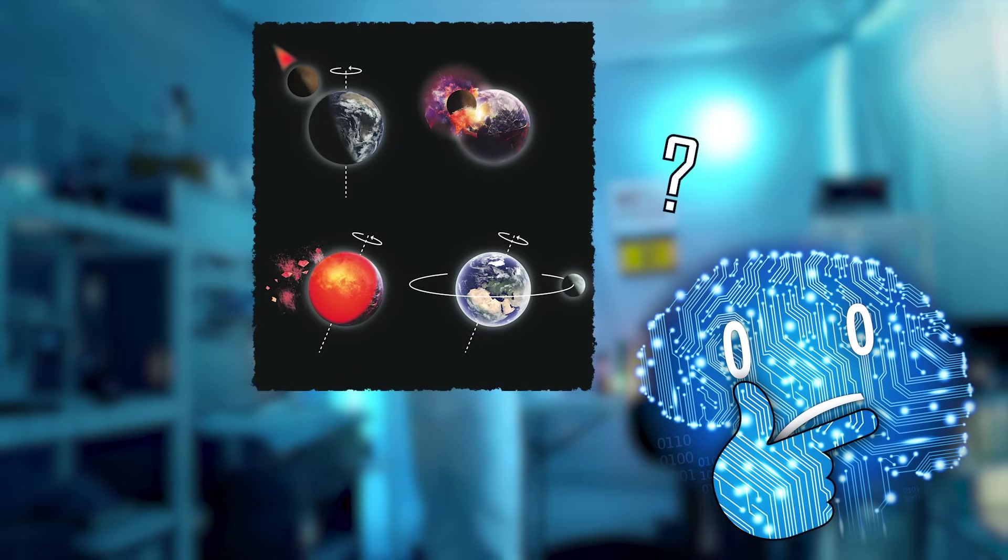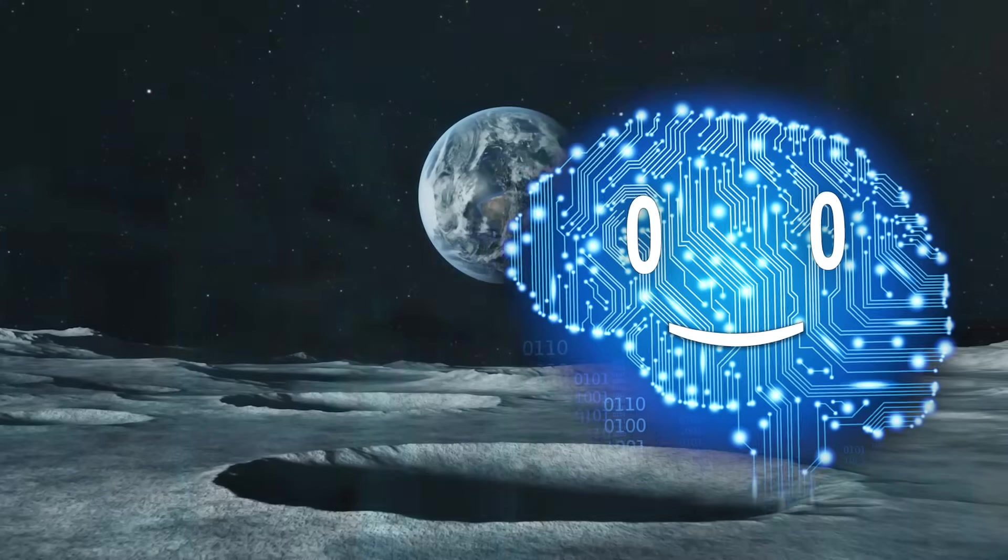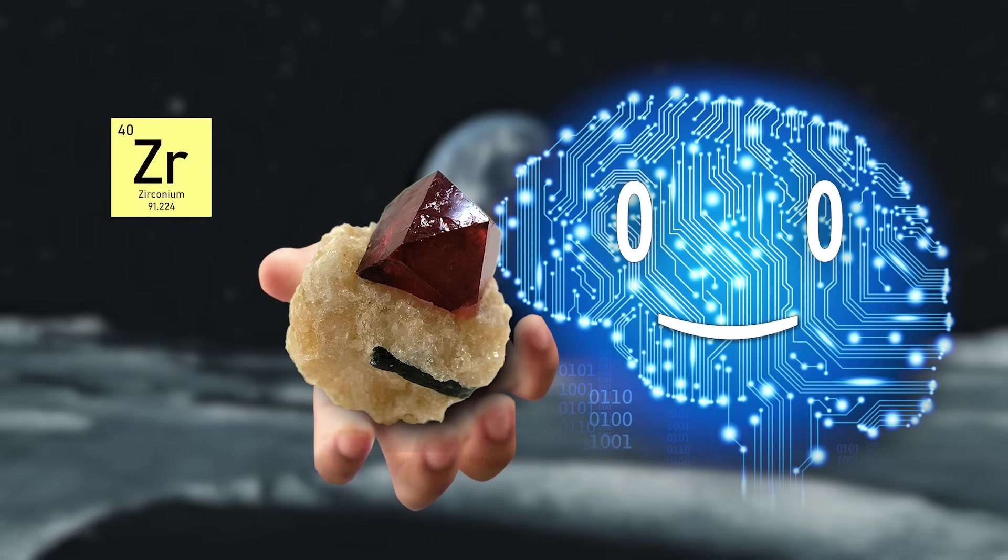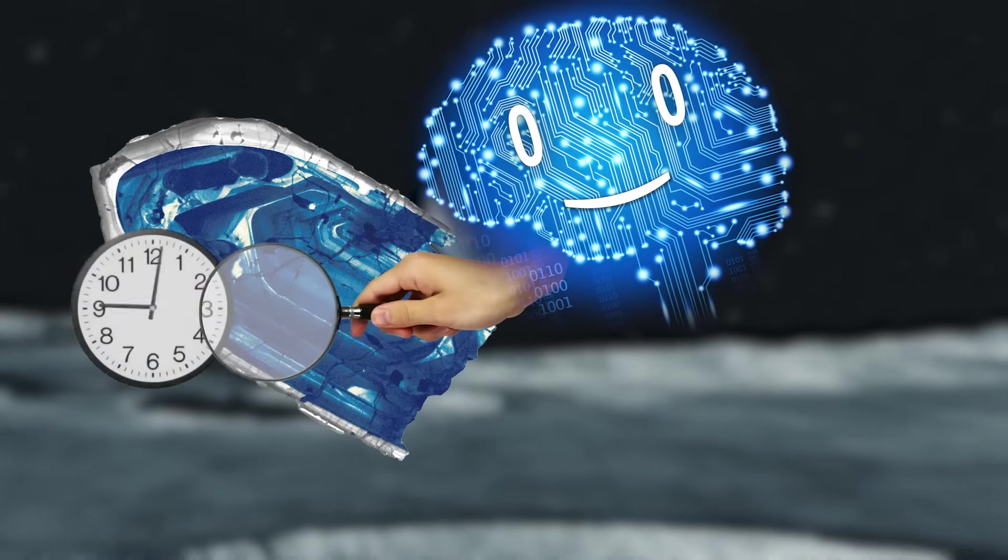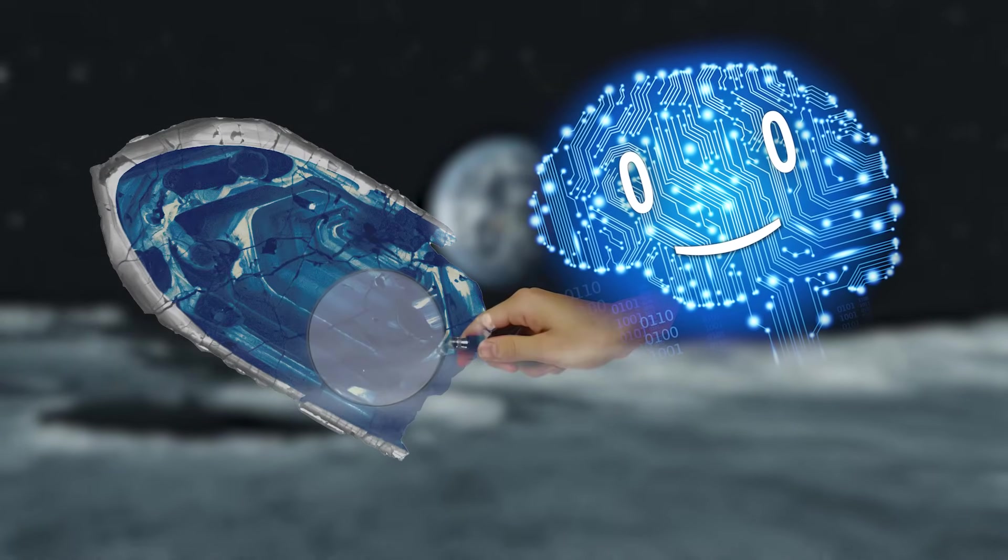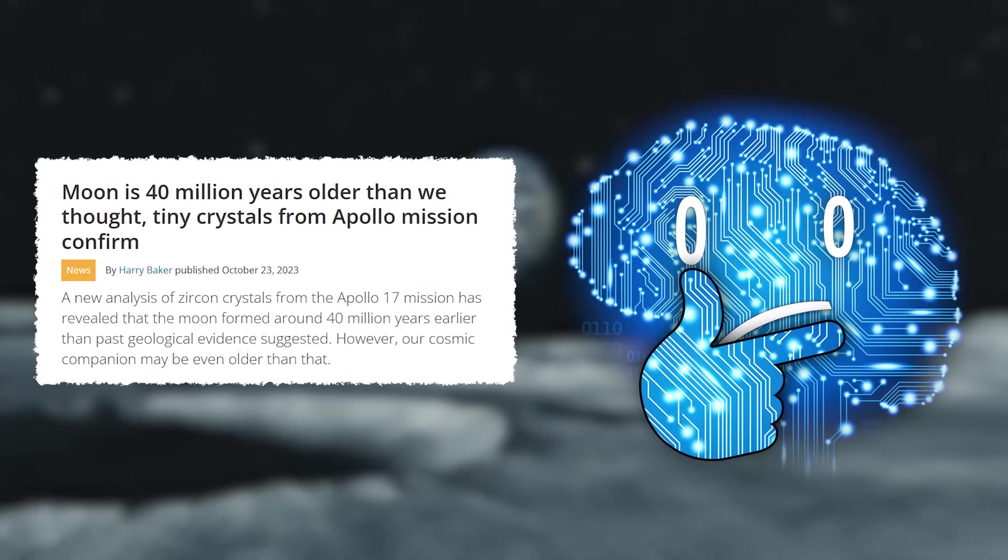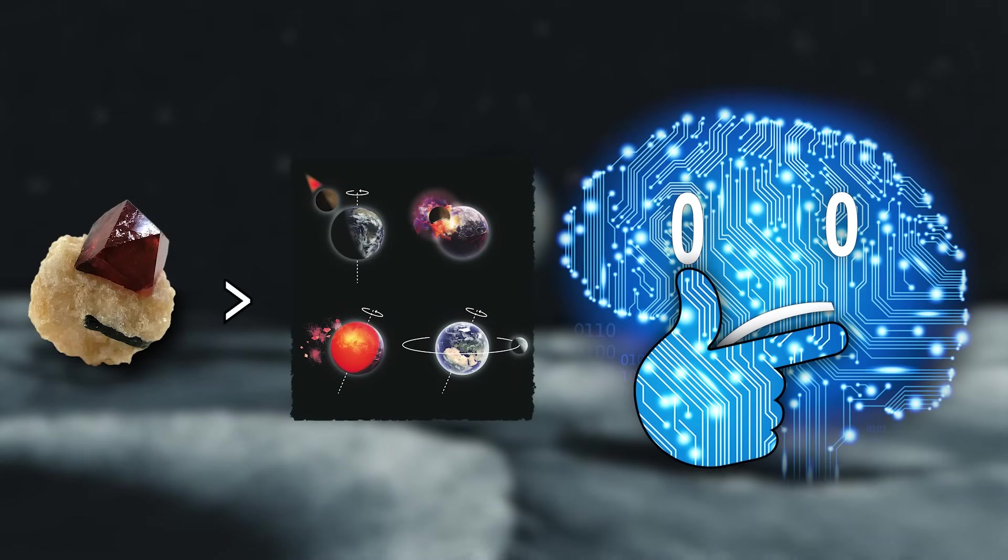Recent findings complicate the giant impact hypothesis story, as zircon crystals have been found on the Moon. The age of zircon crystals can be precisely determined, and it turns out the Moon could be significantly older than the giant impact hypothesis allows.